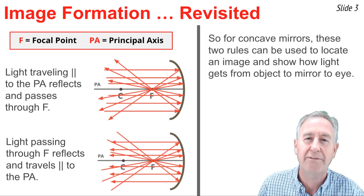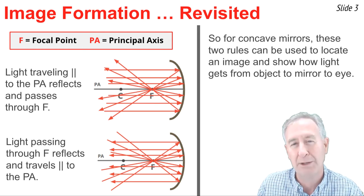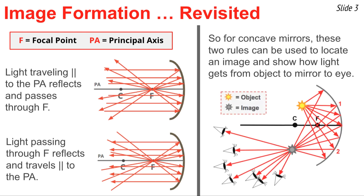We can use these two rules for concave mirrors in order to locate where an image is and to determine how light gets from the object to the mirror to the eye as the eye sights at the image. In this diagram, we notice that ray 1 and 2 are the two rays following our special rules of reflection. They intersect at a point — that point is known as the image point. All other eye positions must sight along a line at this image location in order to see the image of the object. When they do, light travels from the object to the mirror to the eye along the line of sight. We say that an image is the one location in space where it seems to every observer as though the reflected light appears to be coming from.